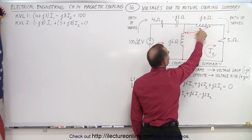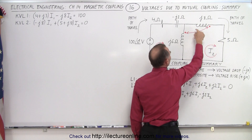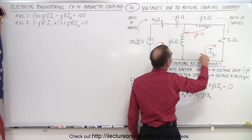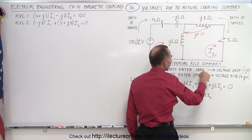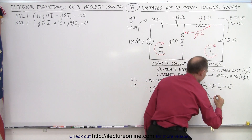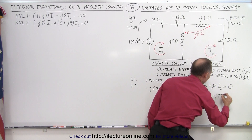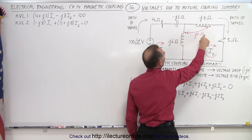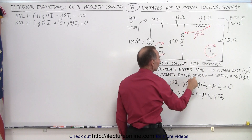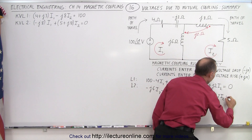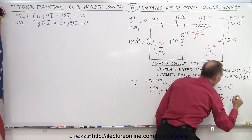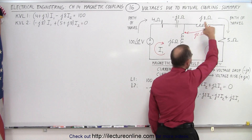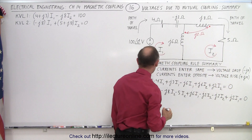I also have a coupling between these two inductors due to current I2 again. I2 enters here and enters there on the same side of the dot — same direction — so that's another voltage drop: minus j2 times I2. Then I have a coupling between these two because of current I1: I1 enters at the dot and I2 enters on the opposite side, so currents enter opposite — that's a voltage rise: plus j2 times I1, caused by current I1 coupling with this inductor. Adding everything up brings me back to zero.